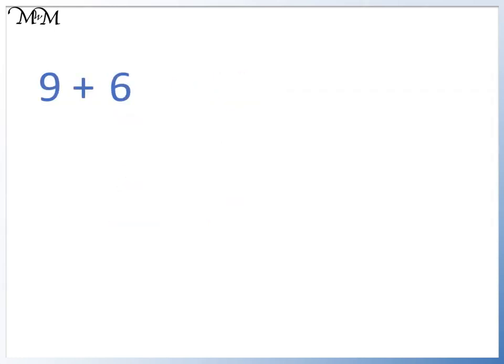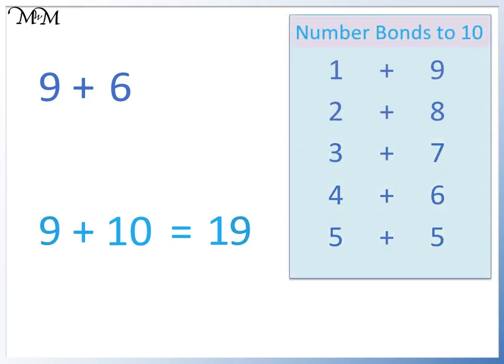9 plus 6. 9 plus 10 equals 19. Looking at our number bonds, 6 is 4 less than 10. We subtract 4 to get our answer. 9 plus 6 equals 15.